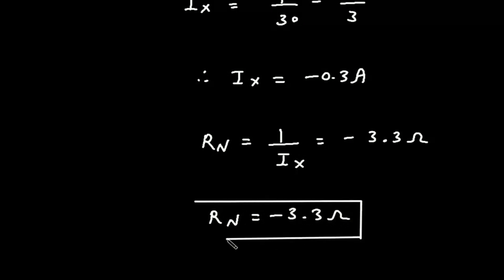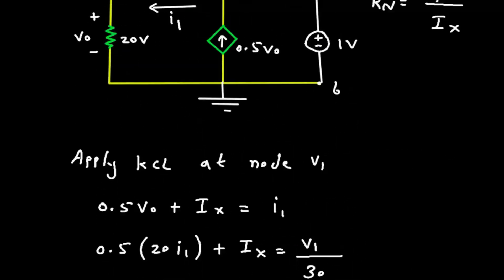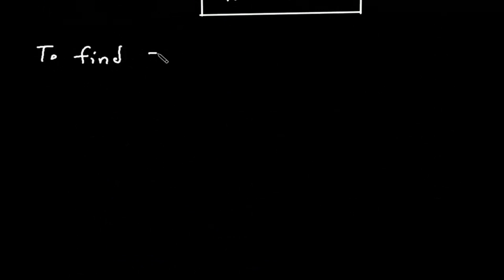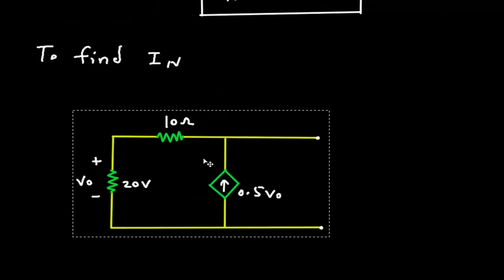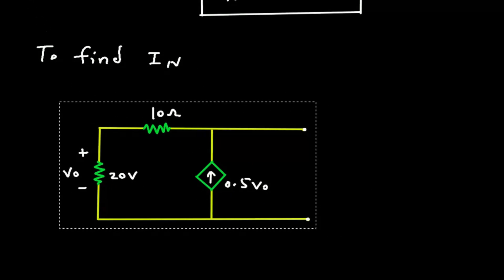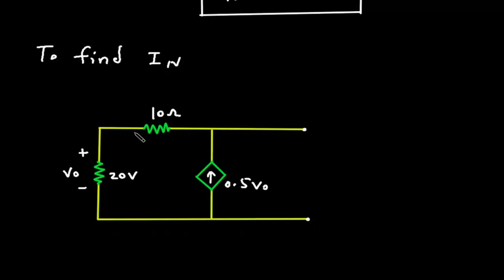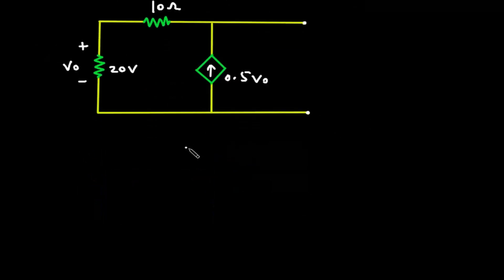Next we have to find In. Here we can see there is no independent source — this source is dependent. So In will be equal to 0 ampere.